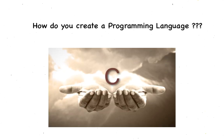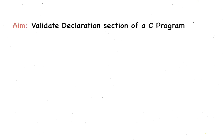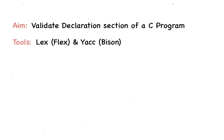In the last video, we talked about how one can create a programming language by defining tokens and grammar. Be sure to check out that video if you already haven't. In this video, we're going to create our own little compiler to validate the declaration section of a C program. We're going to use two language tools, Lex and Yacc, or Flex and Bison, to accomplish this.